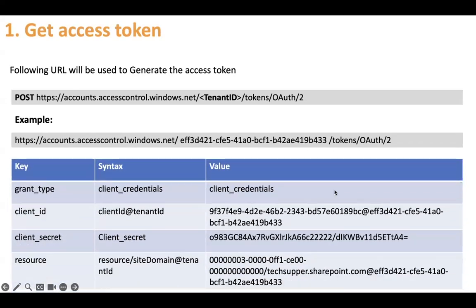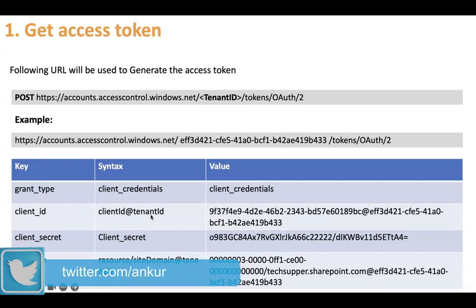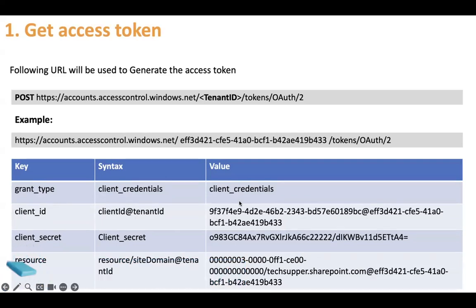Then you need to pass the body where you have to pass the key grant_type, which you will hard-code as client_credentials. Then you have to pass the client_id, and the client ID would be the combination of the client ID that you generate and @tenantID — so like if you have a client ID, it would be that client ID at the rate the same tenant ID that you pass in the path parameter also.